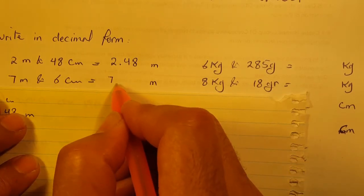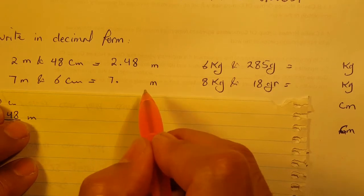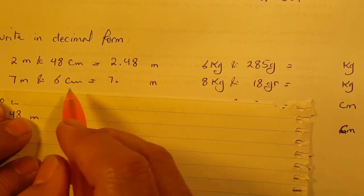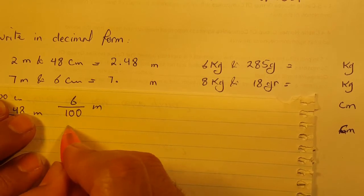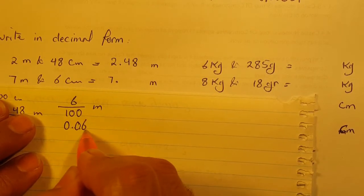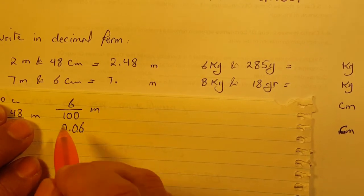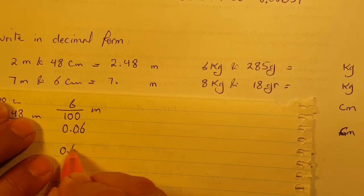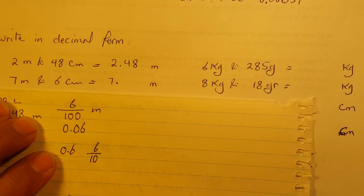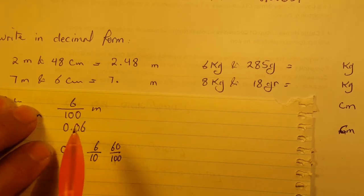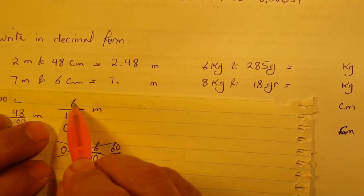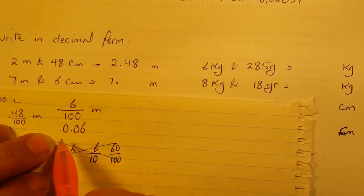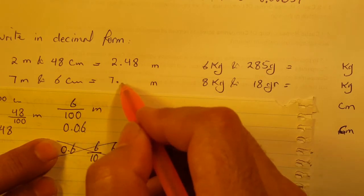For 7 meters and 6 centimeters: 7 meters is the whole number. 6 centimeters equals 6 over 100 meters, which is 0.06. Be careful — if we write 0.6 that means 6 over 10 or 60 over 100, not 6 over 100. So 6 centimeters as meters is 0.06, giving the answer 7.06 meters.